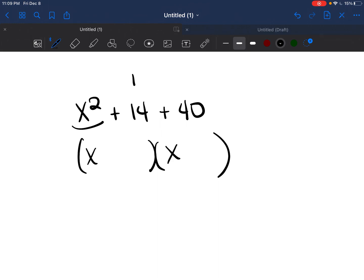Then you remember, two numbers need to add to get that middle number, 14, and they need to multiply to get 40. So what two numbers multiply to get 40, but those same two numbers add to get 14?